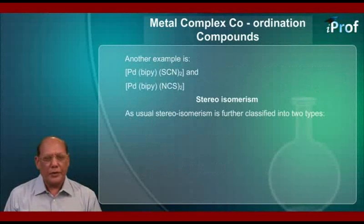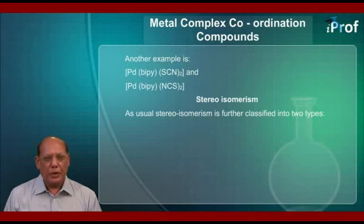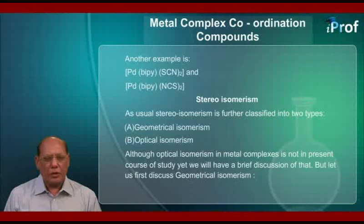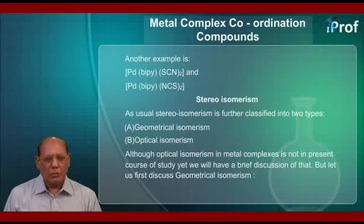Another example of linkage isomers is [Pd(bipy)(SCN)2] and [Pd(bipy)(NCS)2]. Next is stereo-isomerism. Stereo-isomerism is further classified into two types: A) geometrical isomerism and B) optical isomerism. Although optical isomerism in metal complexes is not in the present course of study, yet we will have a brief discussion of that too. But let us first discuss geometrical isomerism.